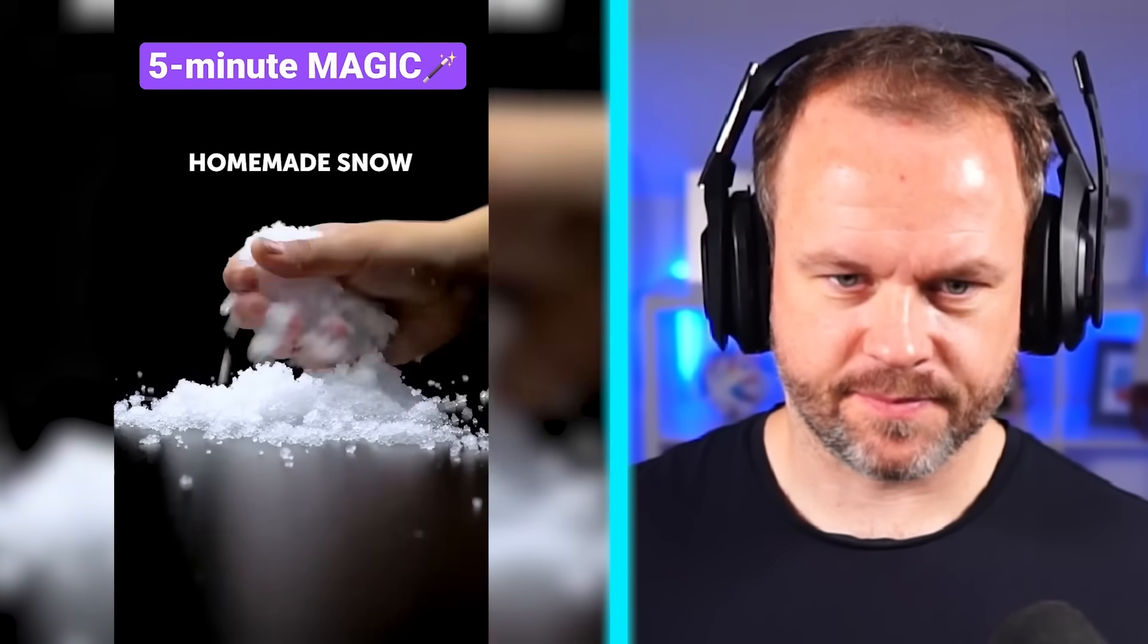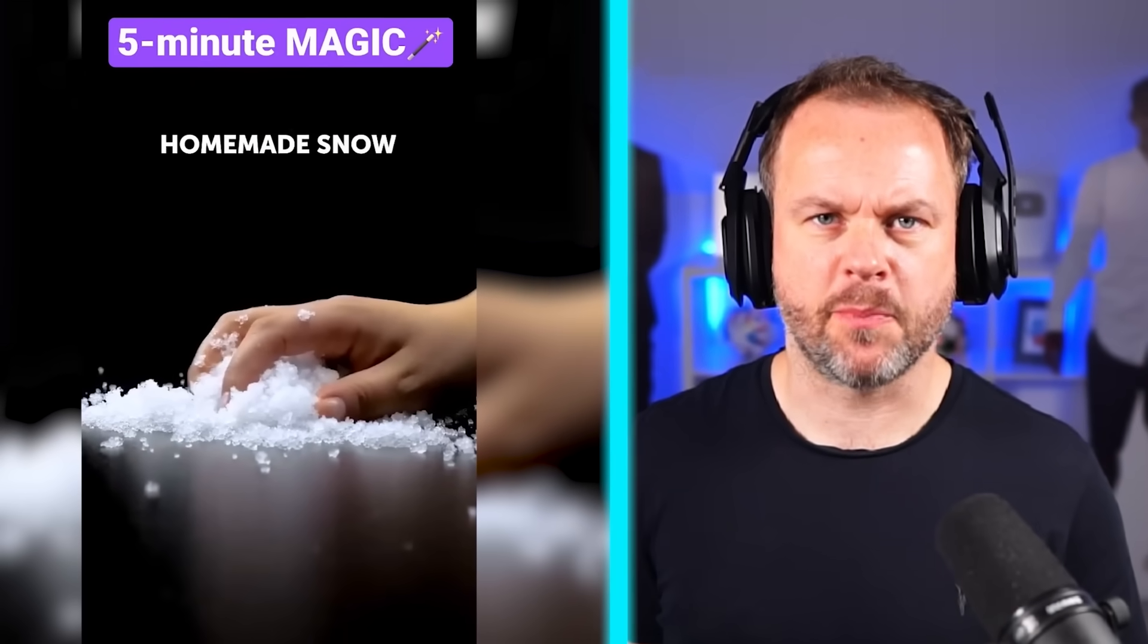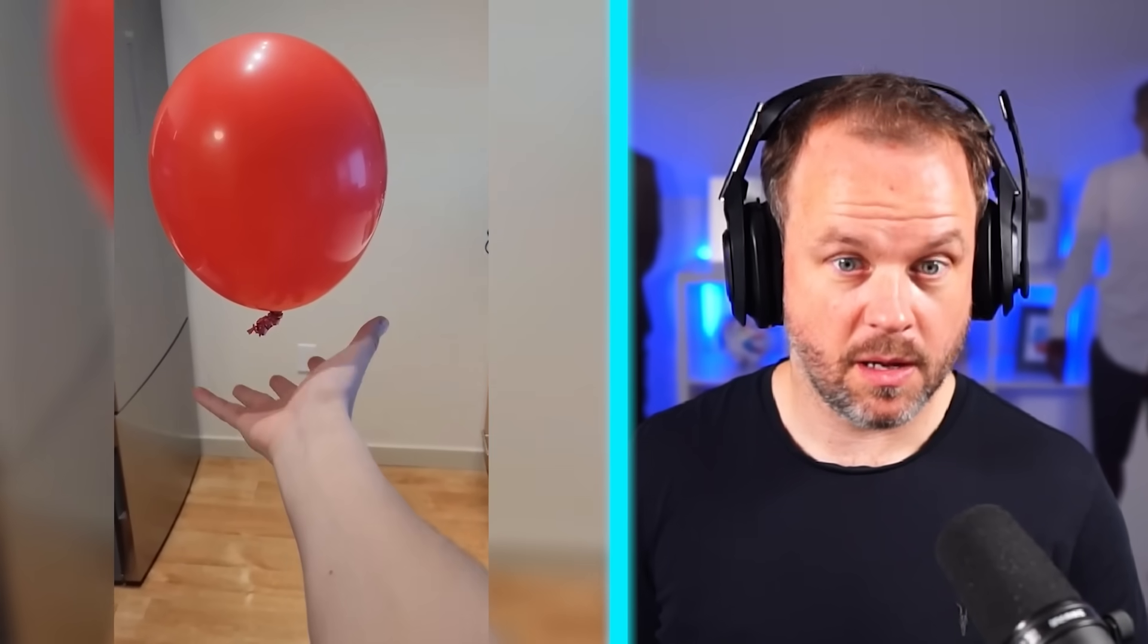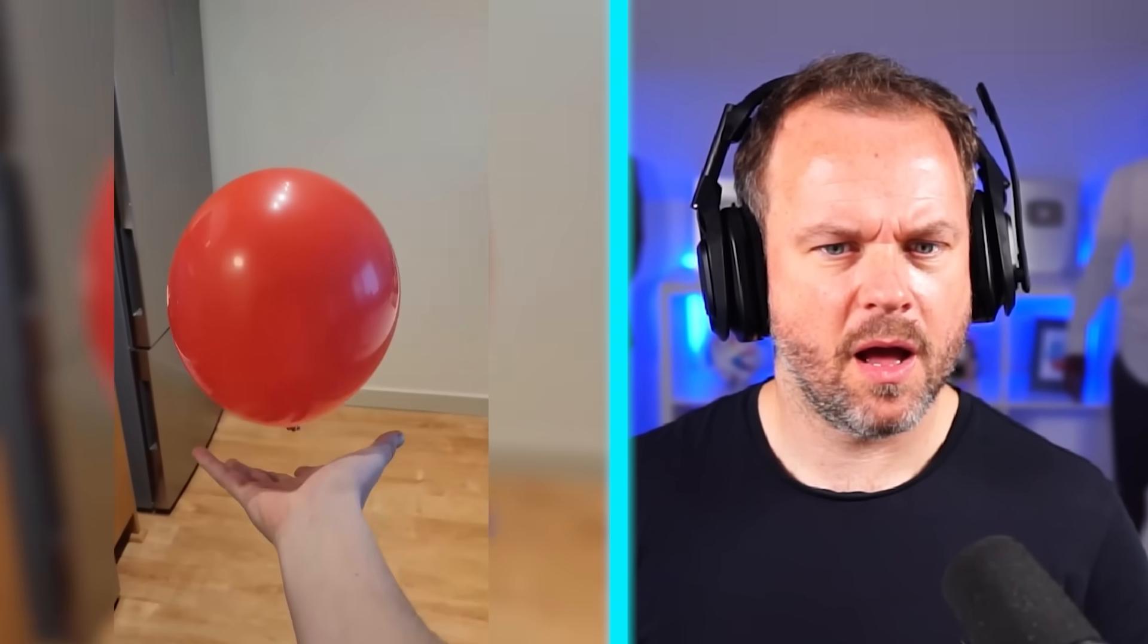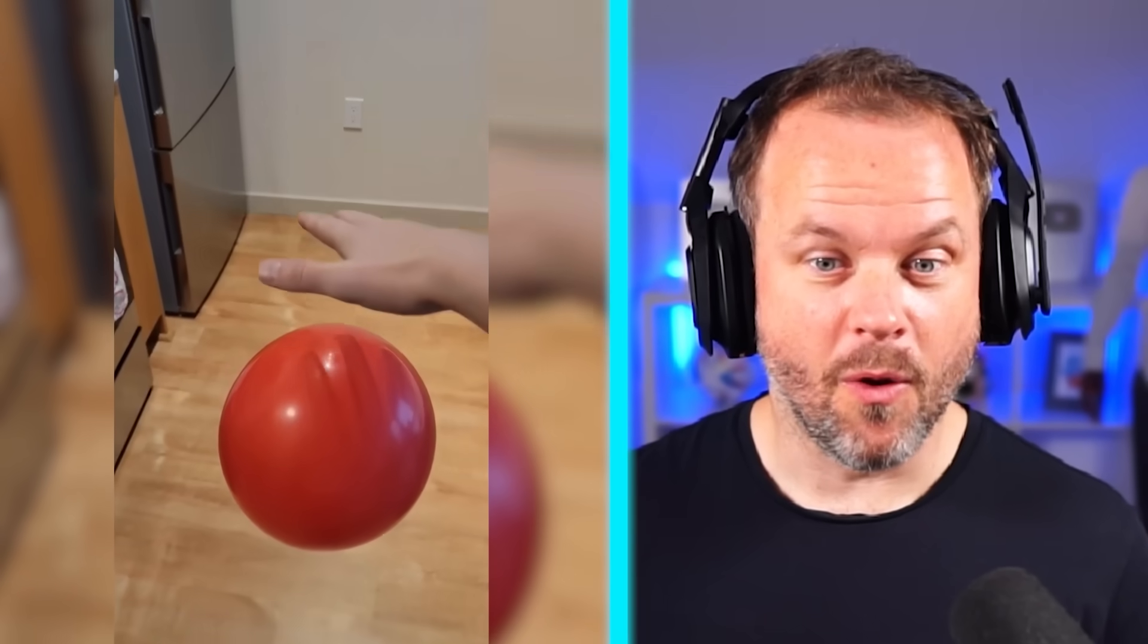This helium balloon floats perfectly still in air because the string has been cut such that the weight matches the buoyant force. Then the static charge on your hands is enough to attract the balloon whichever way you want. That's how magic works. Charge this negatively and then charge the pan by induction.